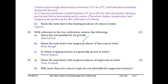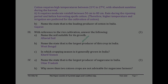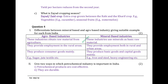Name the state that is the largest producer of sugarcane in India: Uttar Pradesh. Why are more than two ratoon crops not advisable for sugarcane farmers? Yield per hectare reduces from the second year. What is Zayed cropping season? Zayed crop is an extra crop grown between the Rabi and the Kharif crop, e.g., vegetables like cucumber, and seasonal fruits like watermelon.